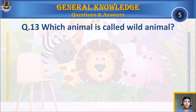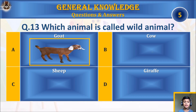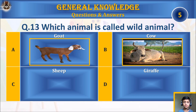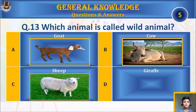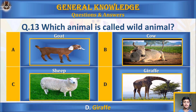Question thirteen: which animal is called a wild animal? A) goat, B) cow, C) sheep, or D) giraffe? Your time starts. The answer is D) giraffe.